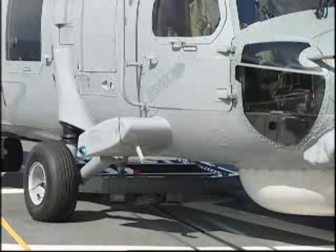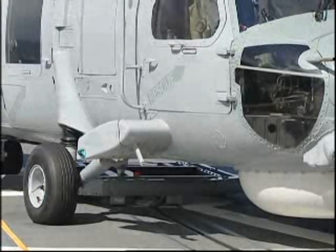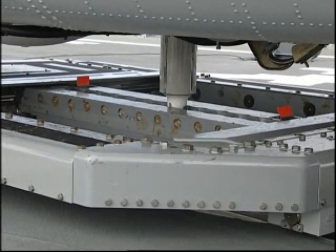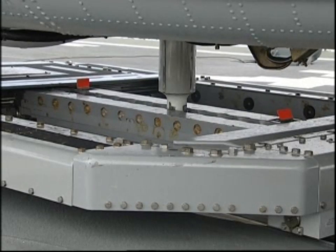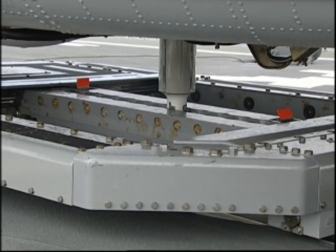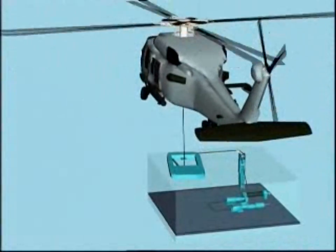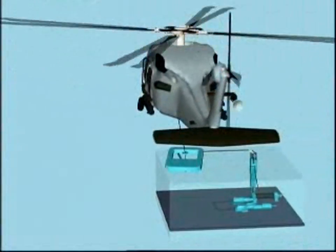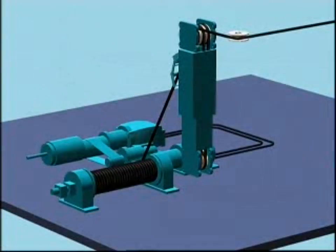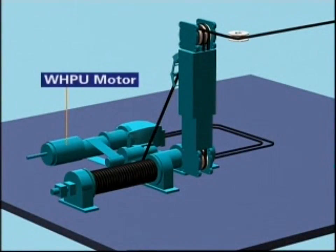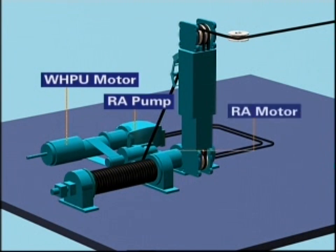The port and starboard arresting beams clamp the main probe to the RSD, which is securely attached within the track. The servo system that performs this function is simple, yet ingenious. It consists of a winch hydraulic power unit — WHPU — powering the RA pump that supplies hydraulics to the RA motor.